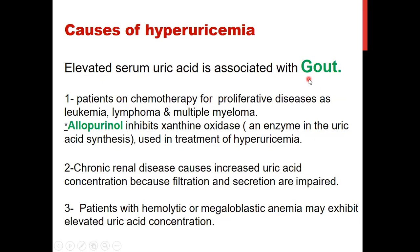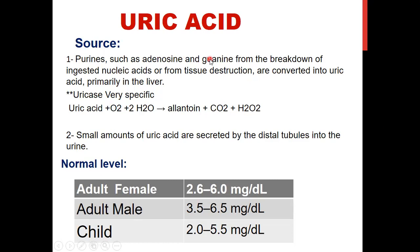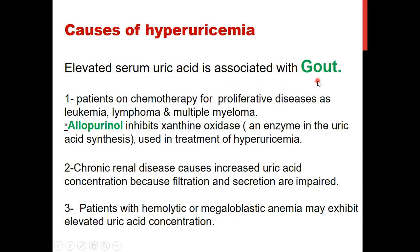Any elevation in uric acid above 6.5 mg/dL causes a disease called gout, or naqras in Arabic. Uric acid comes from the breakdown of adenine and guanine — the purine bases of DNA and RNA. Normal daily turnover of cells releases nucleic acids, and their purine bases are degraded to uric acid in the liver. Elevated uric acid occurs in patients on chemotherapy for proliferative diseases like leukemia and lymphoma, and in patients with chronic renal failure.